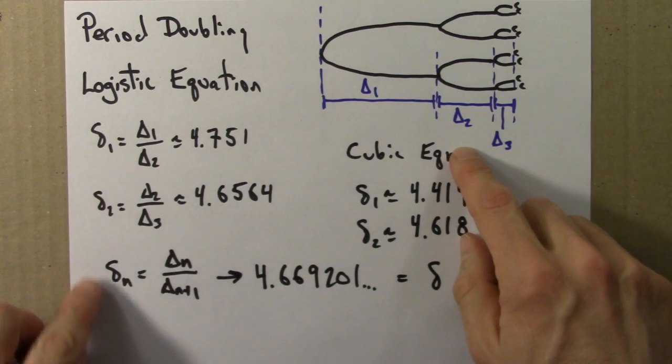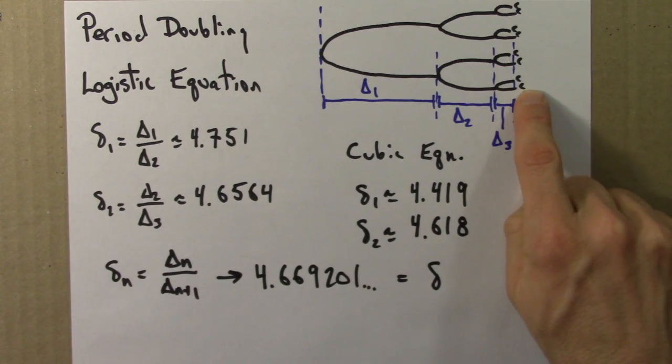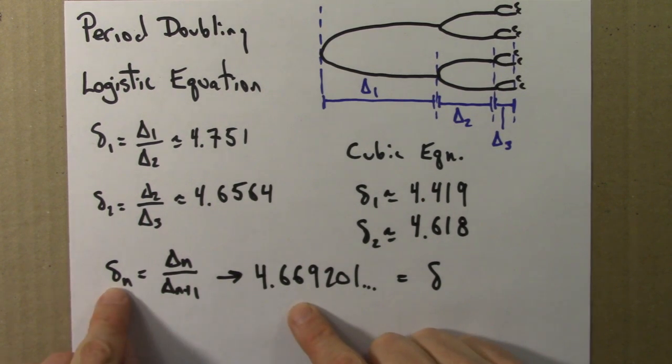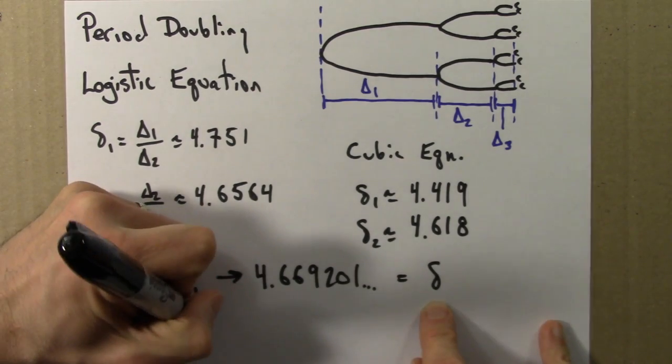So for both of these equations, as we let n get larger and larger, we get closer and closer to this transition point. These ratios approach 4.669201. So in the large n limit, this number is just known as delta, and we would say that delta is universal.